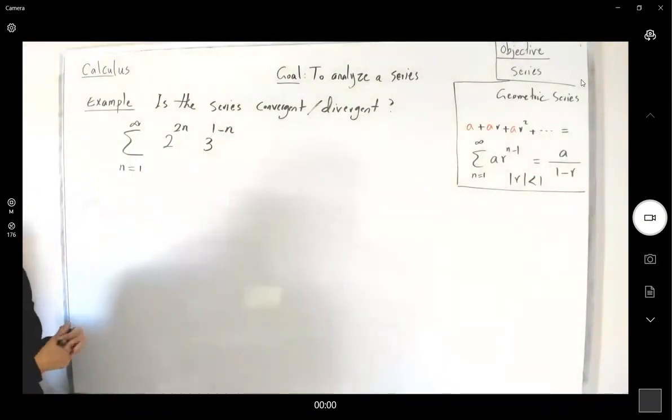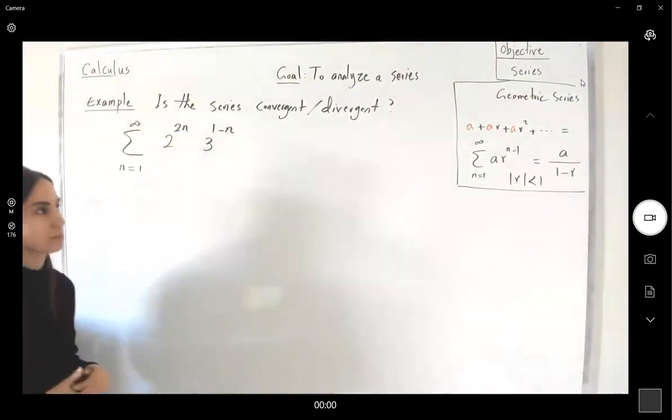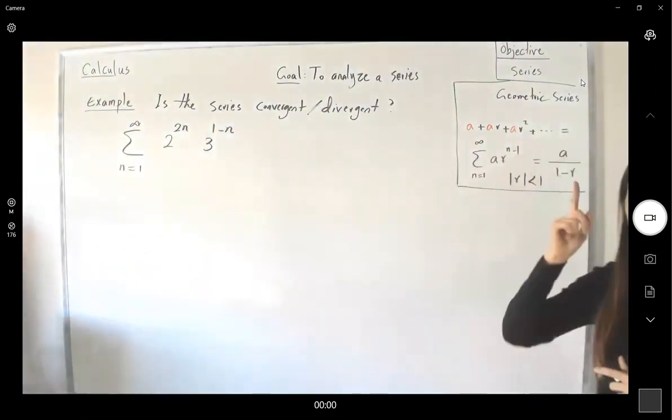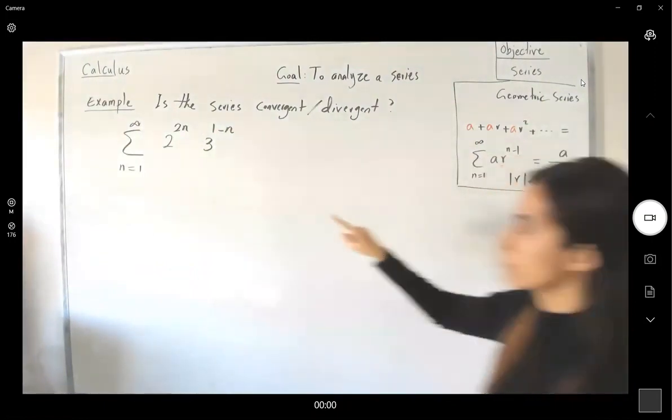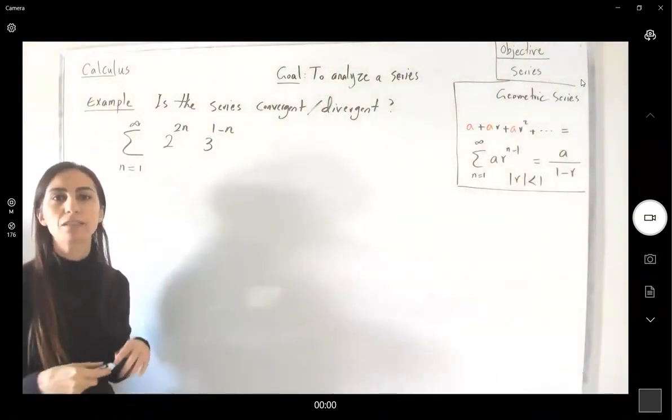As you can see, you have some powers. We have a power here, but it's just associated to one value r. Here you have two bases. One of them is 2, the other one is 3. Let's make some adjustments.